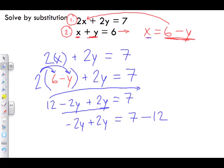But now look what happens when I try to simplify -2y + 2y—I'm going to get zero. When we try to simplify, we get 0y, which is really just zero.